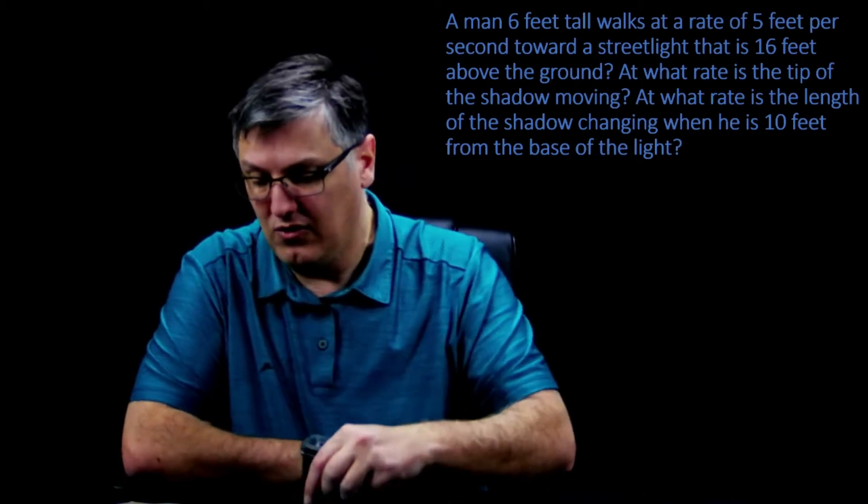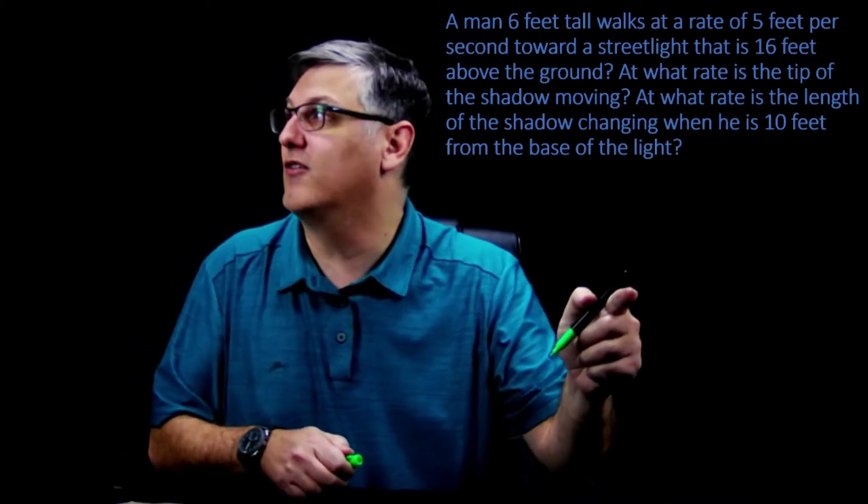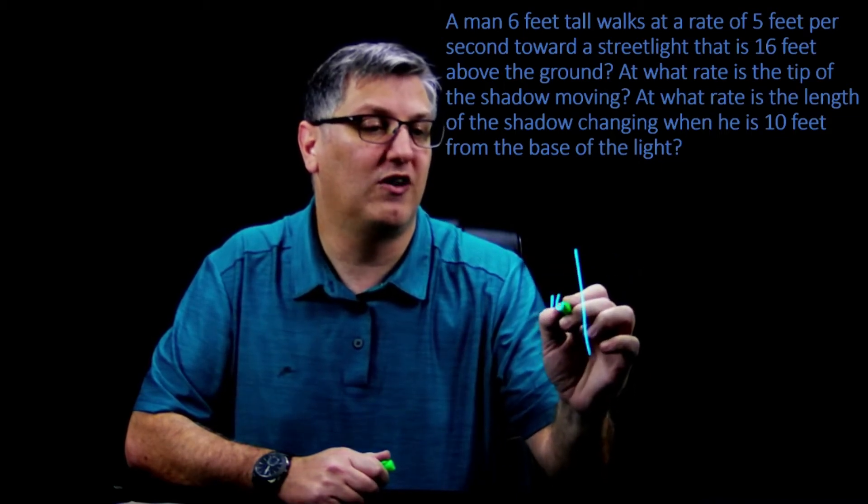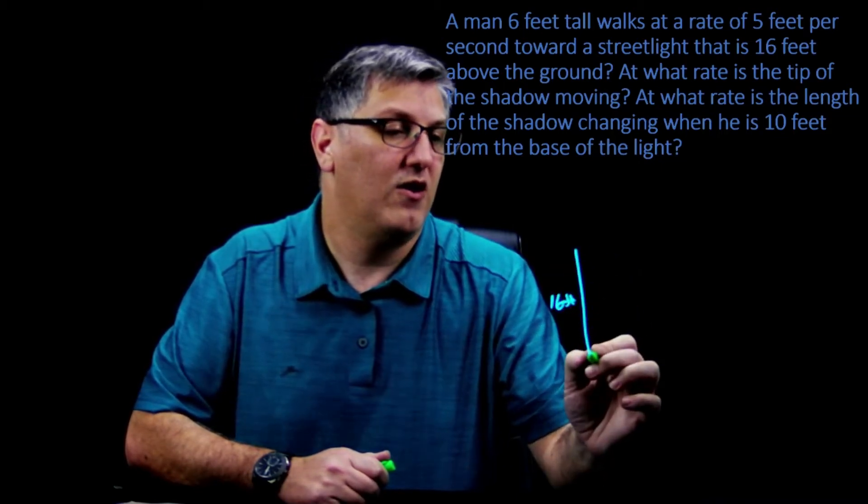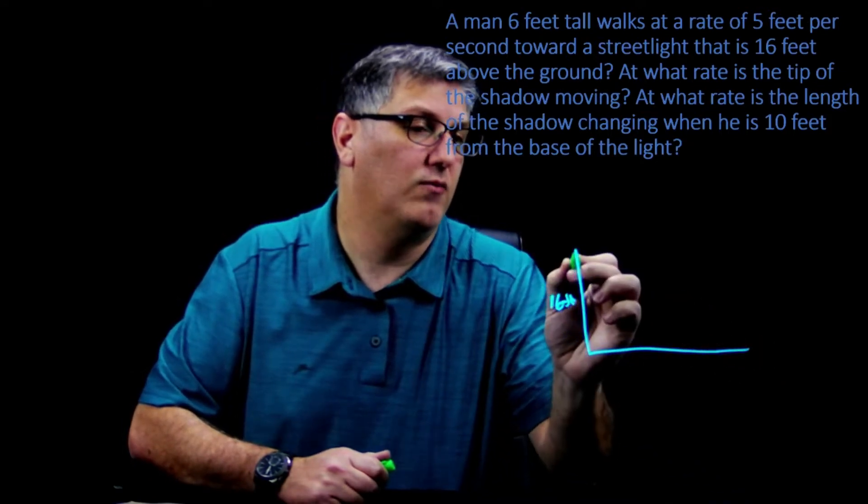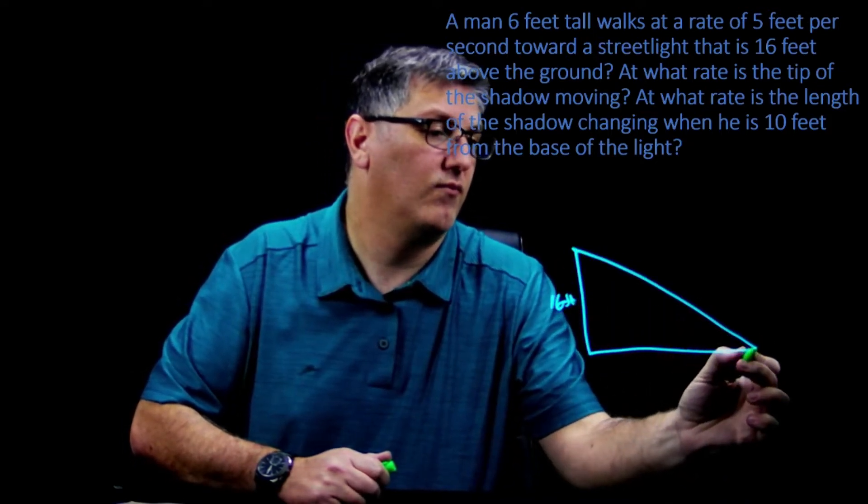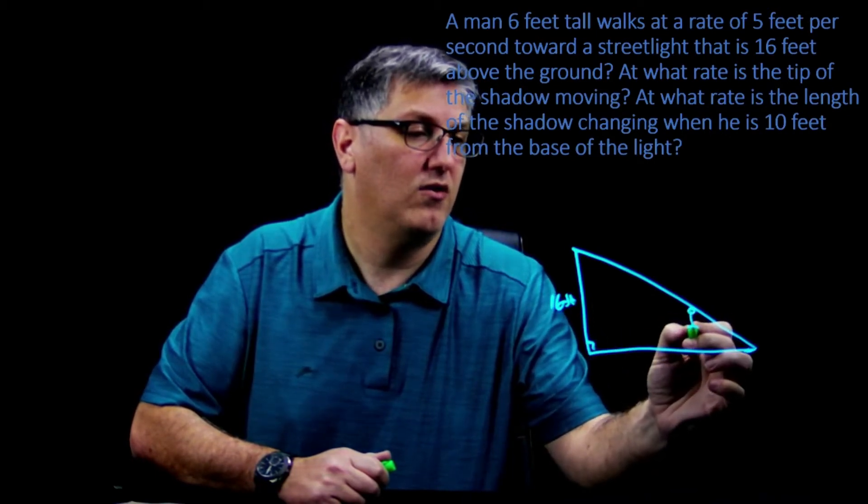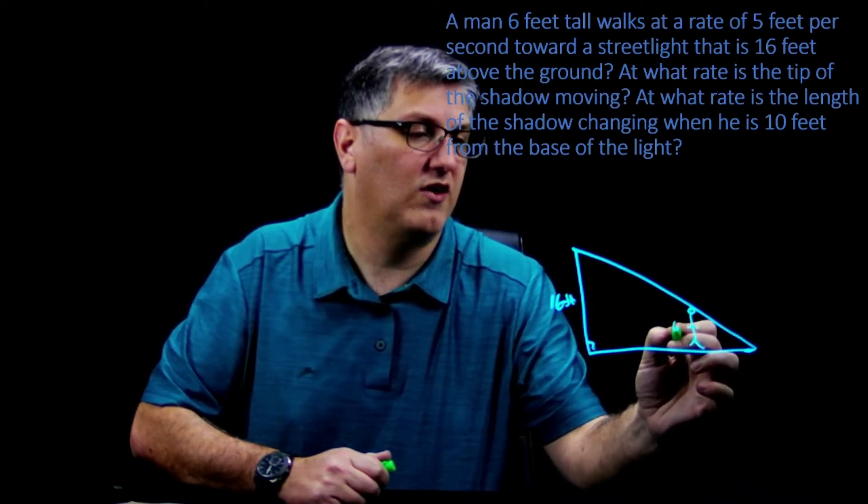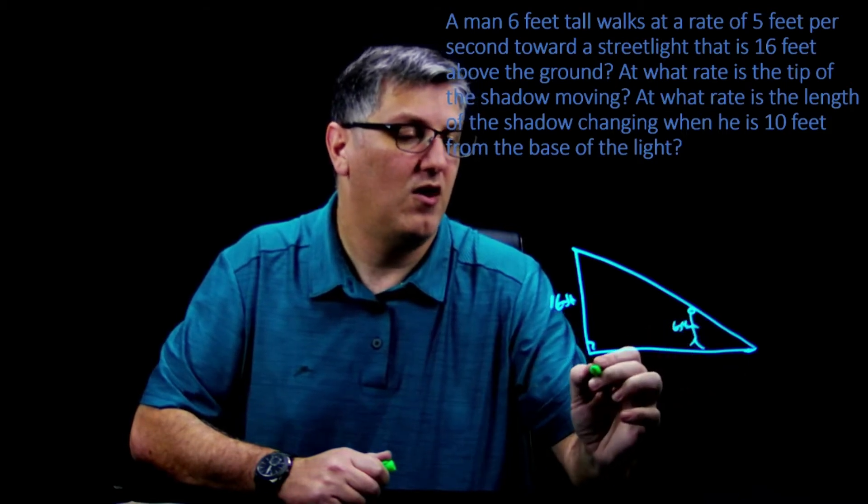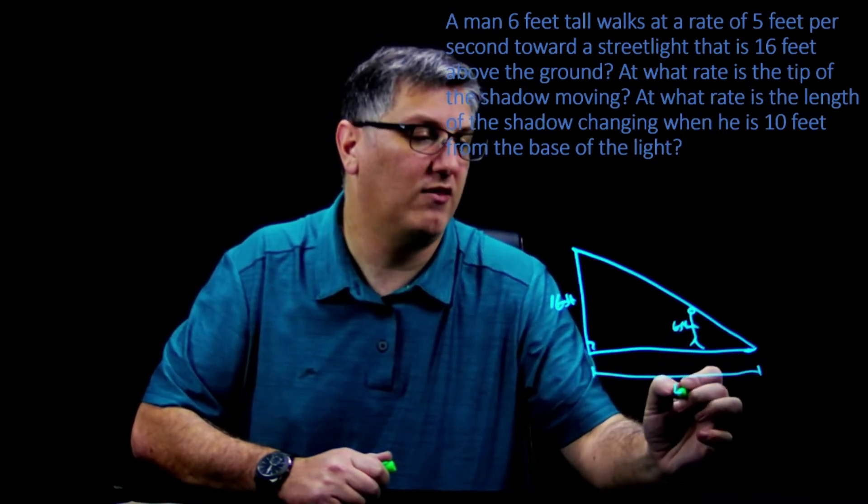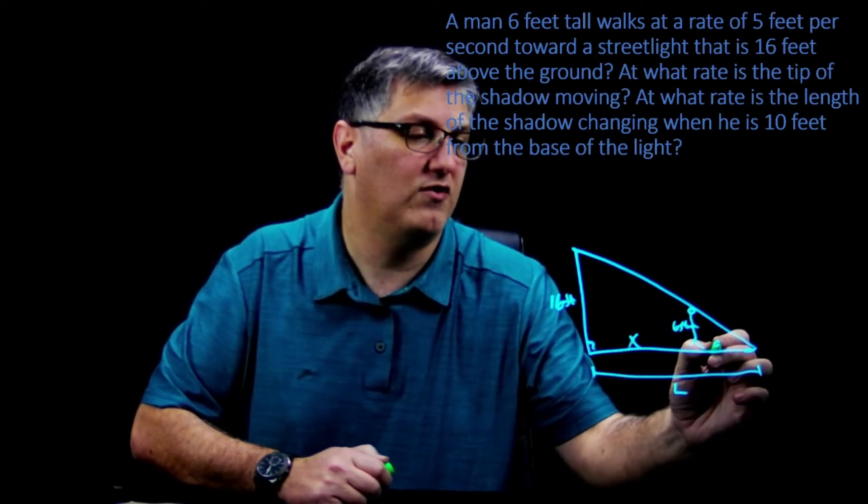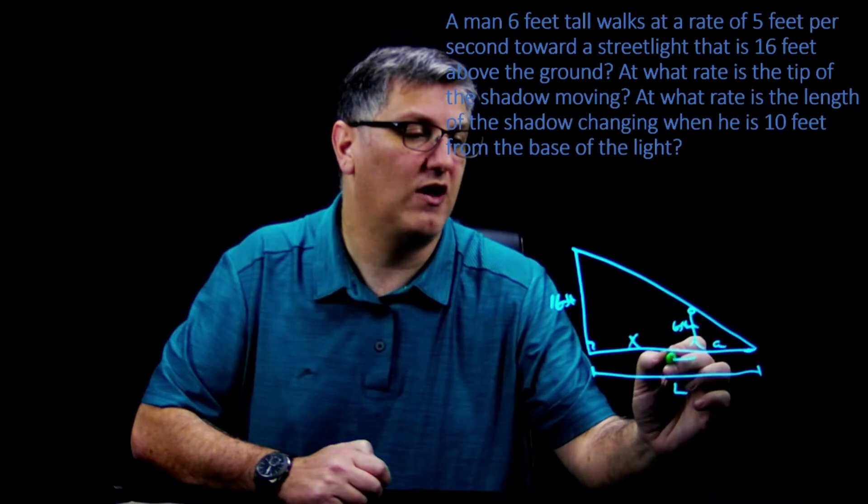So first things first, let's make this into a picture problem. I have my lamppost right here which is 16 feet, it's going to be a right triangle. And I have a little guy here which is six feet tall. I know this total length right here is going to be the length of my shadow. I'm going to call this x and I'm going to call this a. I know this guy's walking this way.